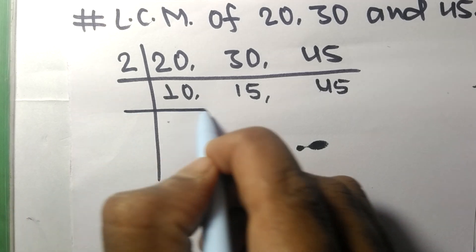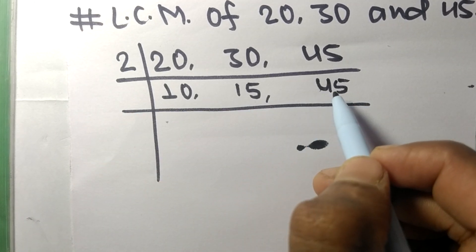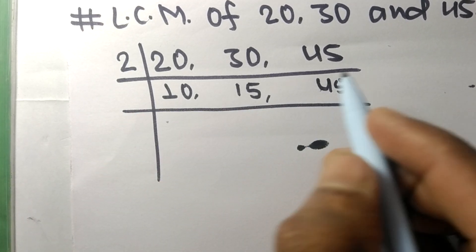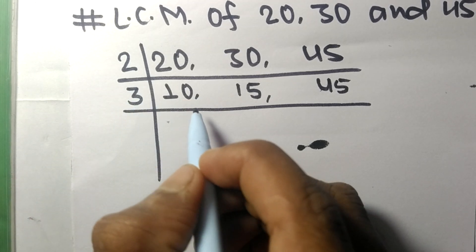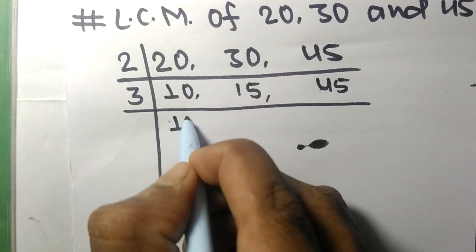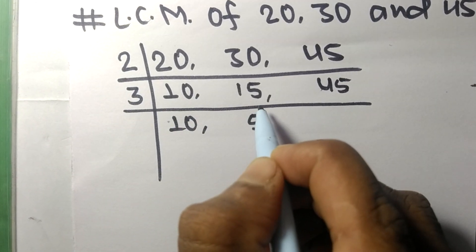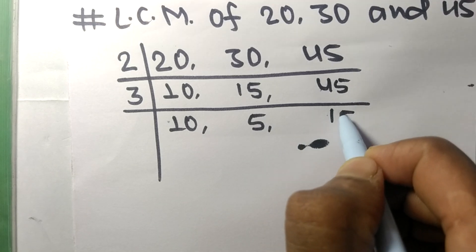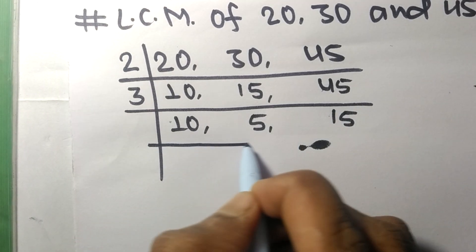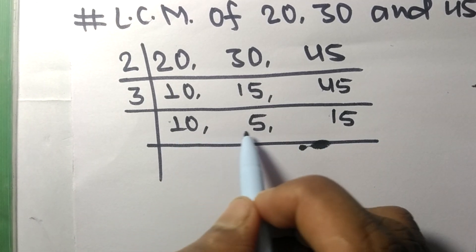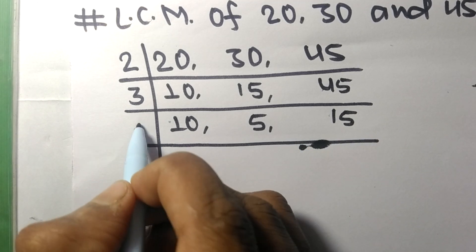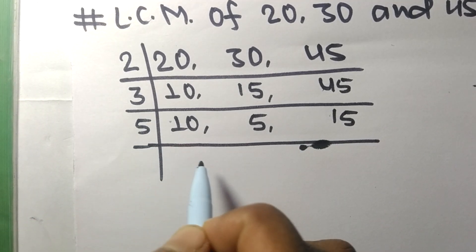Now 15 and 45 are divisible by 3. 10 is not divisible, so it stays the same. 3 times 5 equals 15, 3 times 15 equals 45. Now all these numbers are divisible by 5.